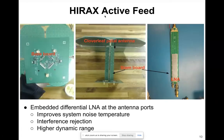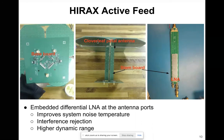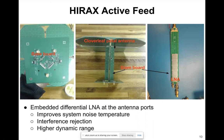This is the IRAQS active feed. The base board is where most of the voltage regulation happens. It houses the cloverleaf petal antenna, and the stem board supports the cloverleaf petal antenna to the base board. The LNA is located on the stem board, and there is also some RFI shielding of the LNA.